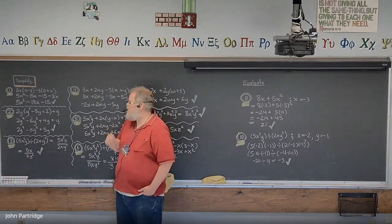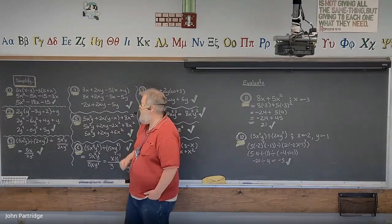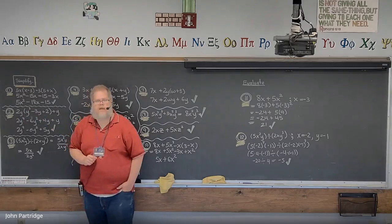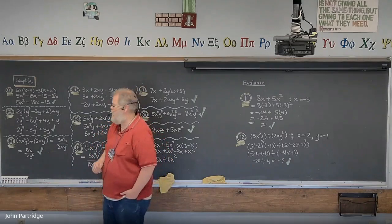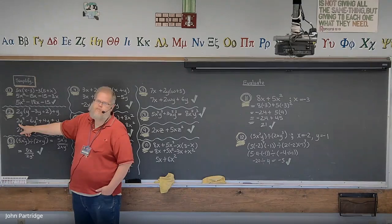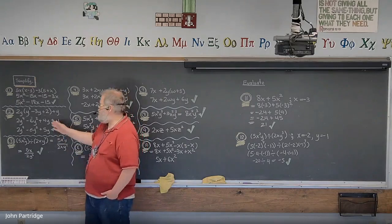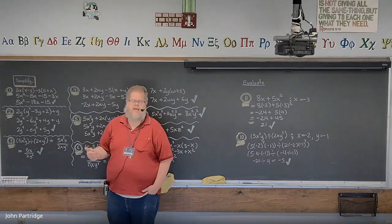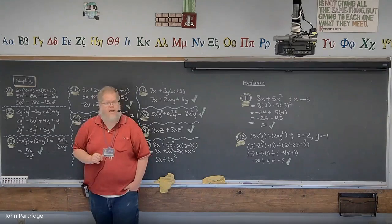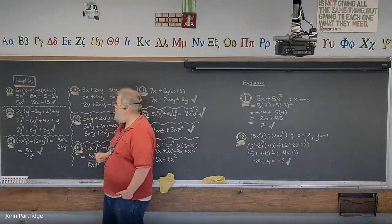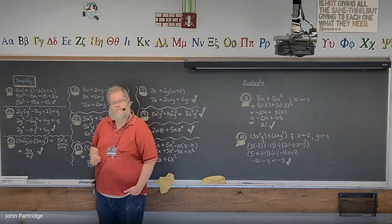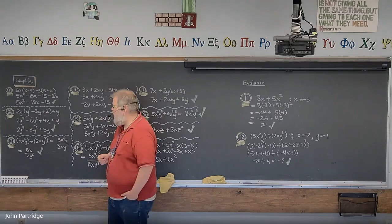Problem 2: 2y(y³ - 3y + 2) + y. This is a monomial times a trinomial, so we distribute 2y into the trinomial. 2y times y³ is 2y⁴, 2y times -3y is -6y², and 2y times 2 is 4y. Are there like terms? Yes — 4y and y combine to give 5y. Final answer: 2y⁴ - 6y² + 5y.